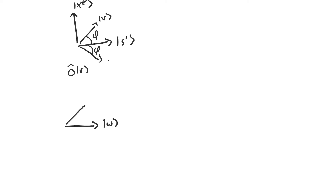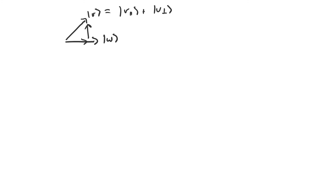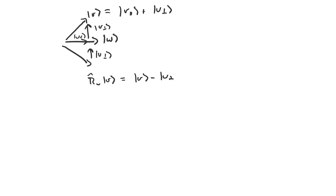To reflect a vector v about another vector w, we break v down into two components: one piece parallel to w and one piece perpendicular to w — call these v-parallel and v-perpendicular. The result of reflecting v about w is equivalent to taking v, subtracting off the perpendicular component to get the parallel component, and then subtracting off the perpendicular component again. So the effect of applying r-sub-w on v is v minus 2 times v-perpendicular.